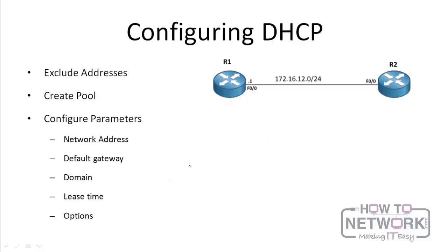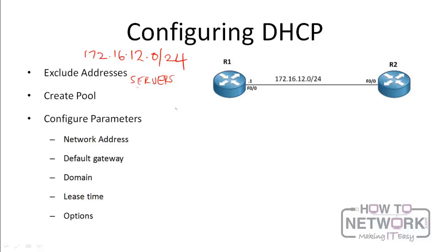To configure a router as a DHCP server, there are three major steps. First, exclude IP addresses. For example, on a network like 172.16.12.0/24, you may have servers - a mail server, file server, web server - all on the same network needing static IP addresses. If you configure DHCP without excluding those addresses, there will be conflicts because servers use the static addresses while DHCP assigns the same addresses to clients. So the first step is to exclude IP addresses.